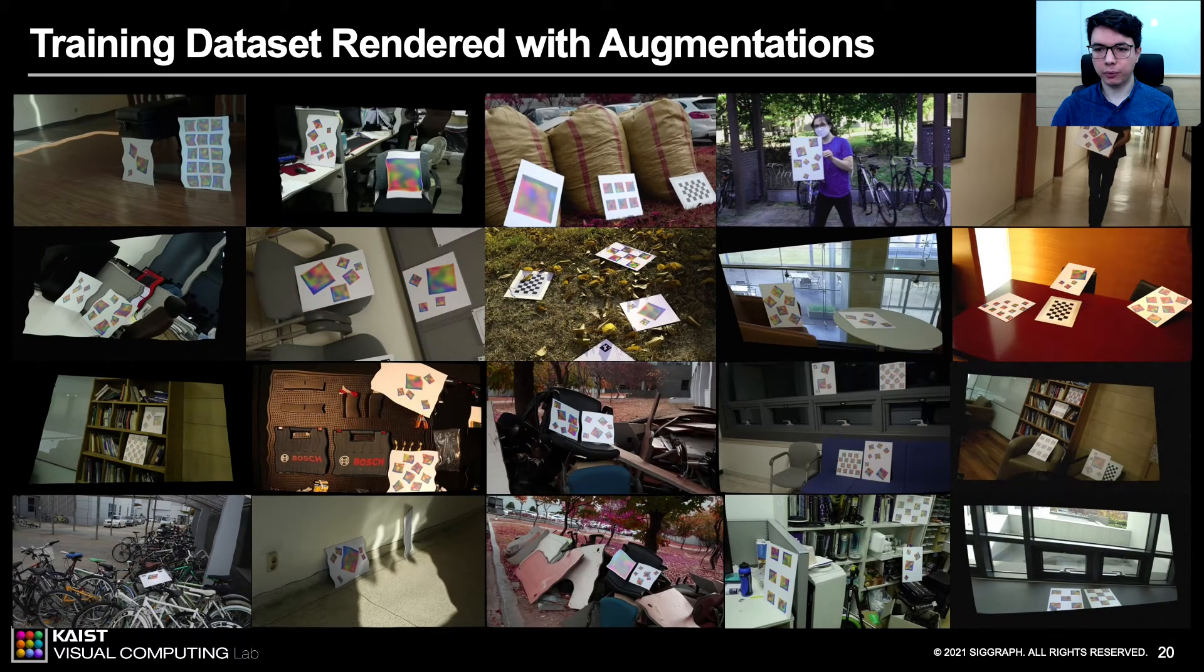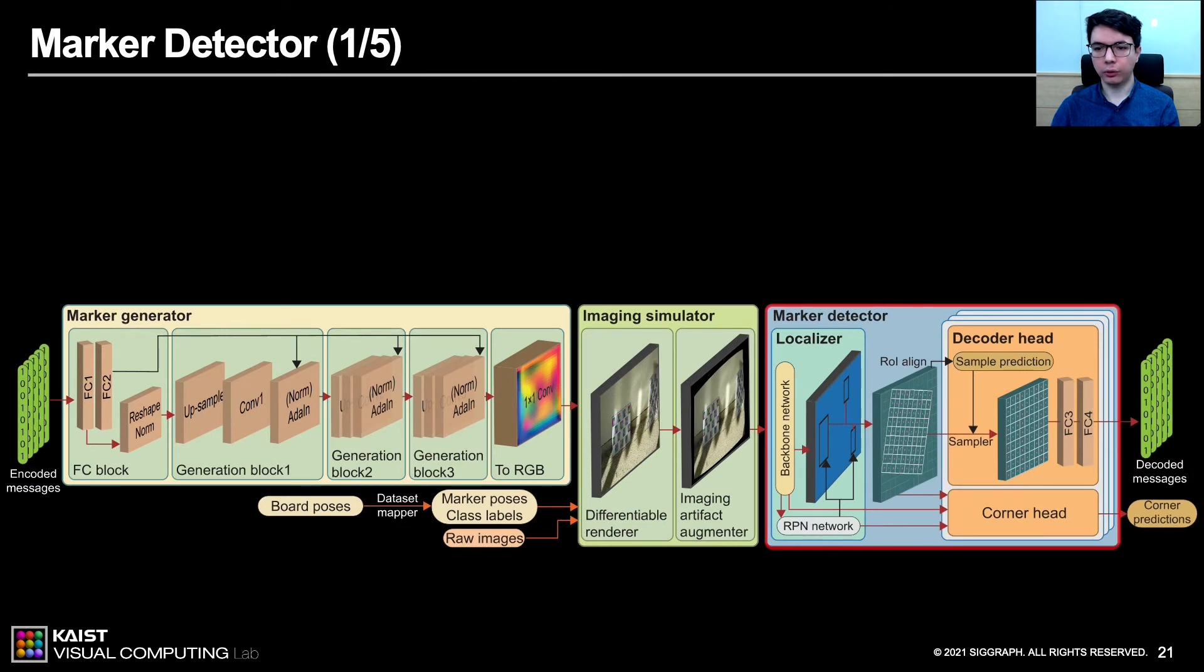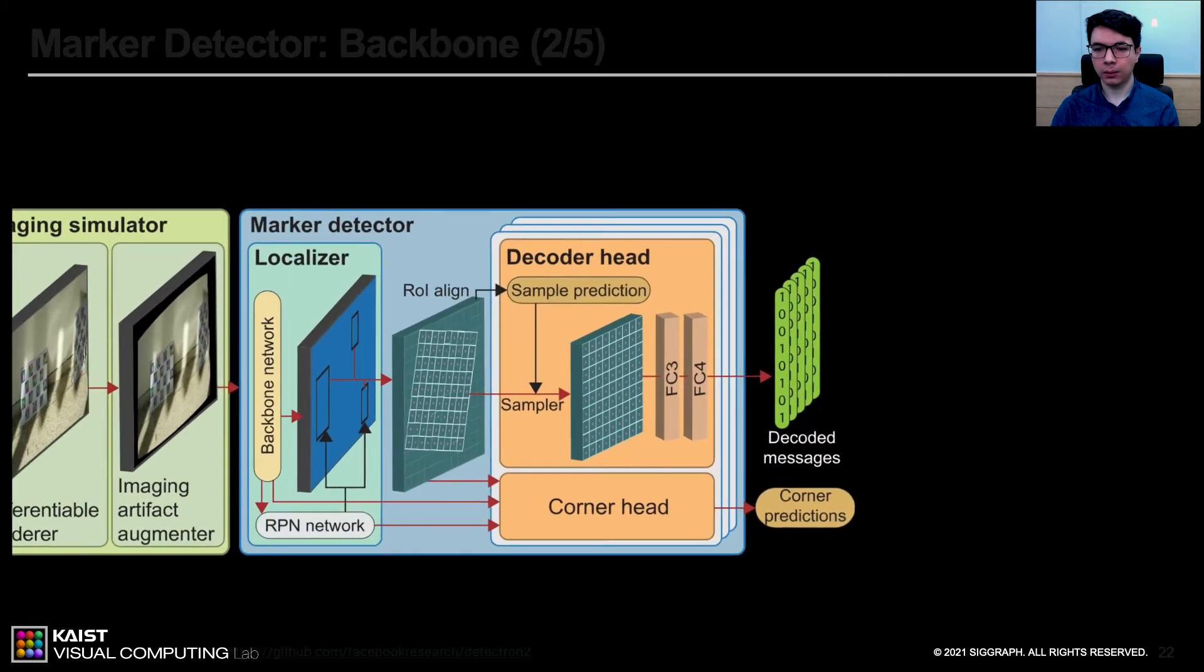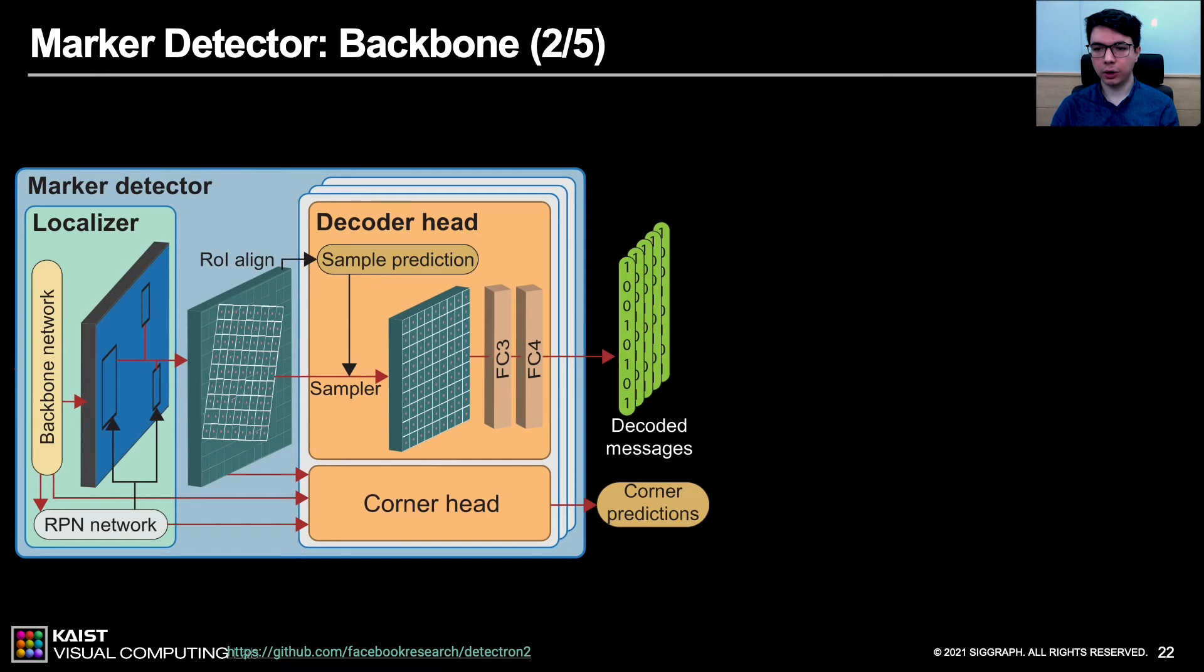Here, we show samples from our generated training dataset. We will release our code and the dataset soon on our project page. Our ultimate goal for the marker detection is to detect and decode multiple markers in real-time. While doing so, we want our system to be robust against scale changes and non-linear geometric transformations. To achieve the efficiency of real-time system, we built our architecture upon two-stage Faster R-CNN using the Detectron 2 framework.